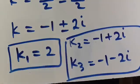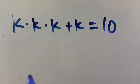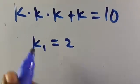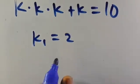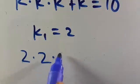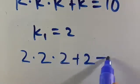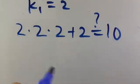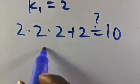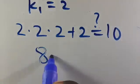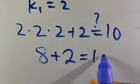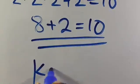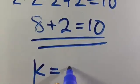Let's verify the real solution. When k equals 2, we compute 2 times 2 times 2 plus 2. That is 2 times 2 equals 4, then 4 times 2 equals 8, and 8 plus 2 equals 10. This confirms the solution k equals 2 is correct.